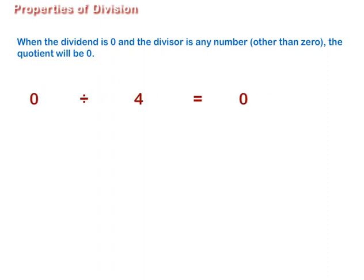For example, 0 divided by 4 is equal to 0. 0 divided by 39 is equal to 0.